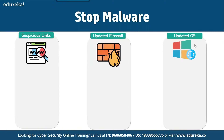To stop malware, first avoid clicking on suspicious links — always study the URL and make sure you are not on a counterfeit site, as we saw in the Amazon phishing example where the hyperlink redirected to a different page. Second, update your firewall, since firewalls prevent the transfer of large data files and attachments that may contain malware. Third, keep your operating system up to date, because software programmers frequently update programs to address new vulnerabilities.